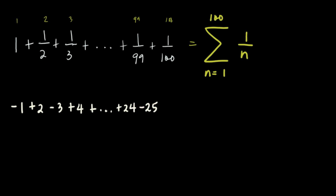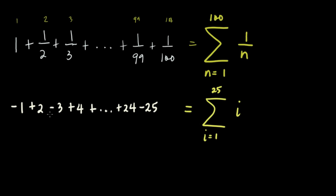This one looks a bit tricky because if you'll notice, the signs are alternating. We start with negative and then it becomes positive. If all of them were positive, there's no problem — the summation would just be I from I equals 1 to 25. But the problem here is it starts negative, then becomes positive, then negative again, then positive, and so on, up to negative 25.